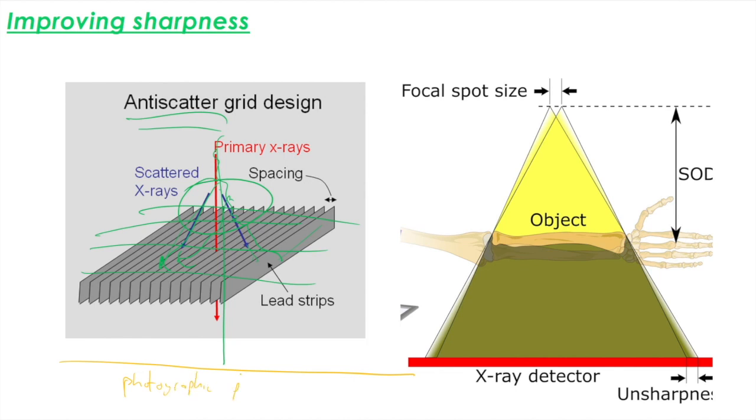So the idea is I would have all my collimators, my shutters, all at the top, then my patient, then an anti-scatter grid. And then at the bottom, I then have my photographic plate, which obviously also would include my image intensifiers and everything else.